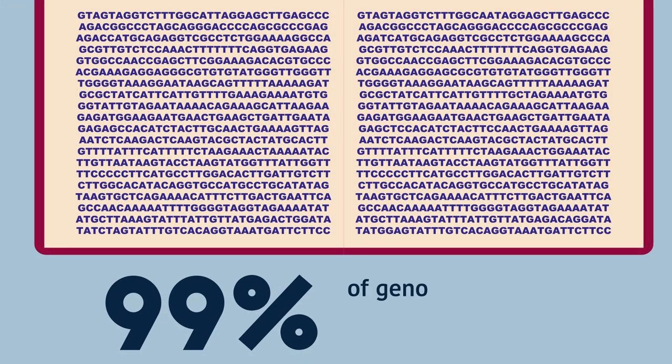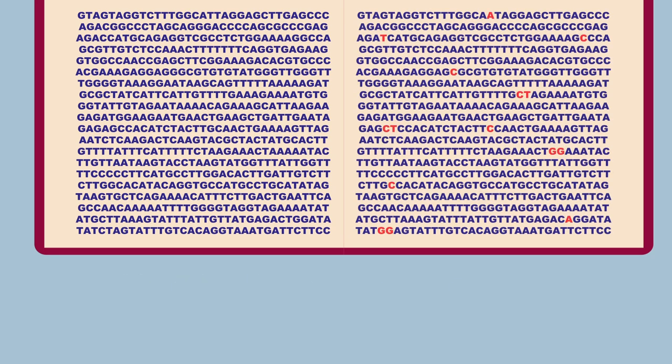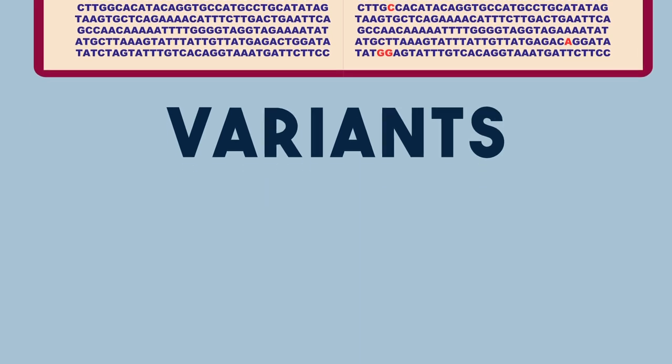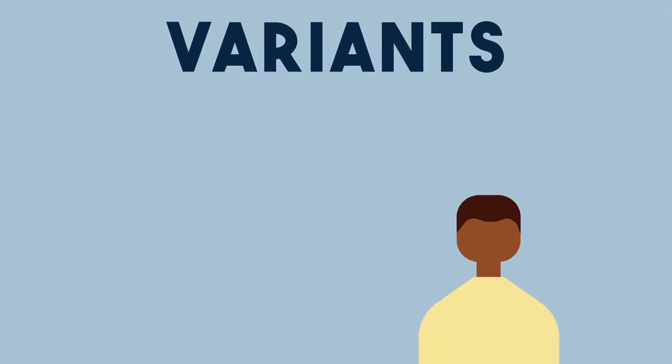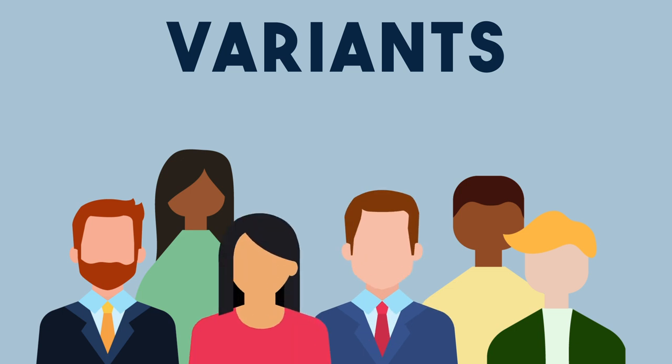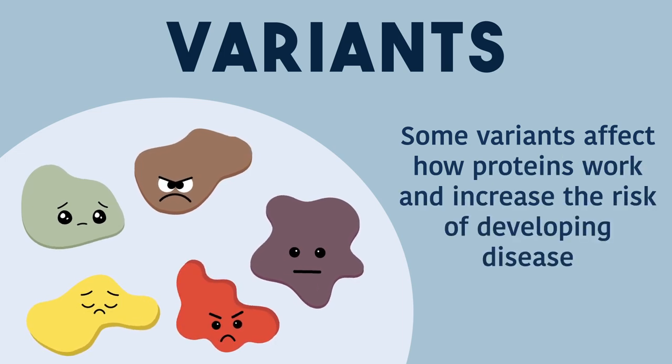About 99% of the letters in our genome are the same from person to person, but that 1% is what accounts for any differences between you and I. Although 1% may not seem like a lot, these changes in our DNA, also called variants, are what makes us who we are. It determines what each of us looks like and can influence how we behave. However, it can also affect how our proteins work, which can affect our risk of disease.